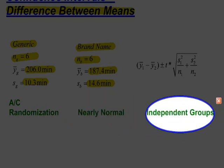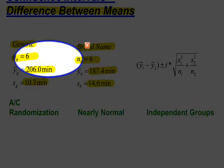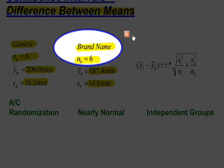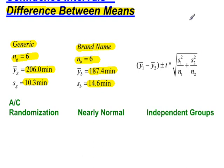And then finally, this one is independent groups. Are my two groups independent of each other? Well, there's no reason to believe that the generic group of batteries and the brand name group of batteries have a connection in any way. So my assumptions and conditions have been met.